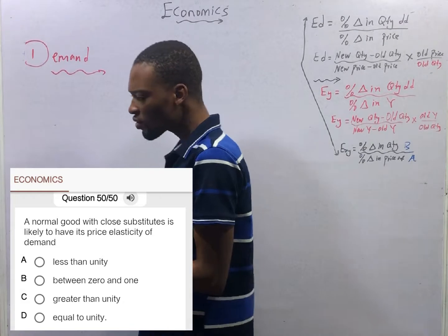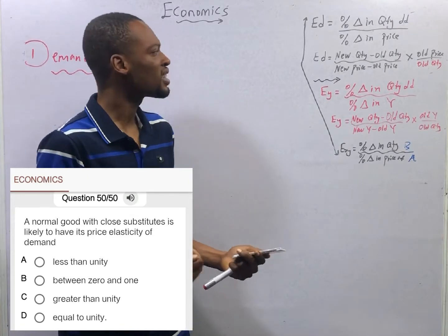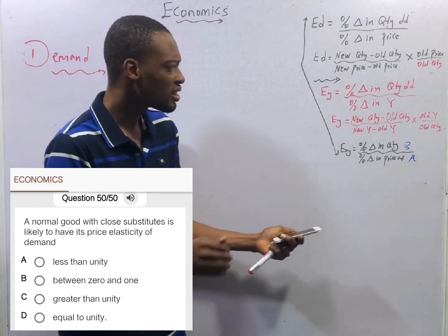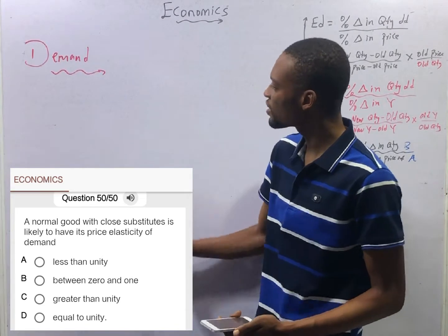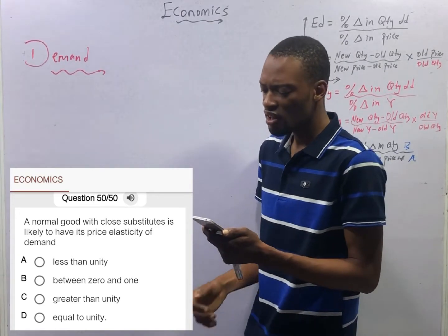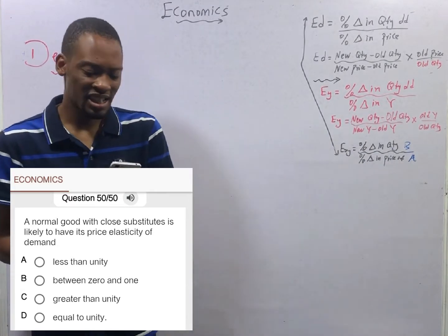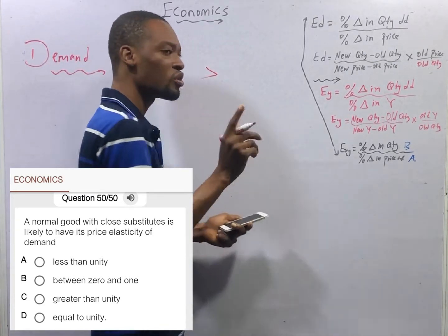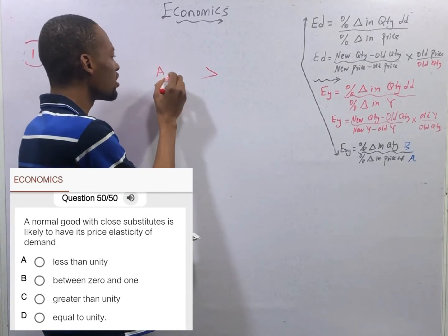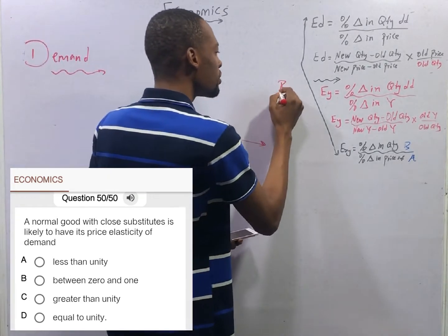Now, close substitutes. For goods with close substitutes, the demand for one excludes the other. For example, Milo and Bournvita. What Milo can do, Bournvita can do it. Which means they are close substitutes. If Bournvita misbehaves, we move to Milo. If Milo misbehaves, we move to Bournvita. And in goods with close substitutes, the price elasticity of demand is greater than one. Do you know why?